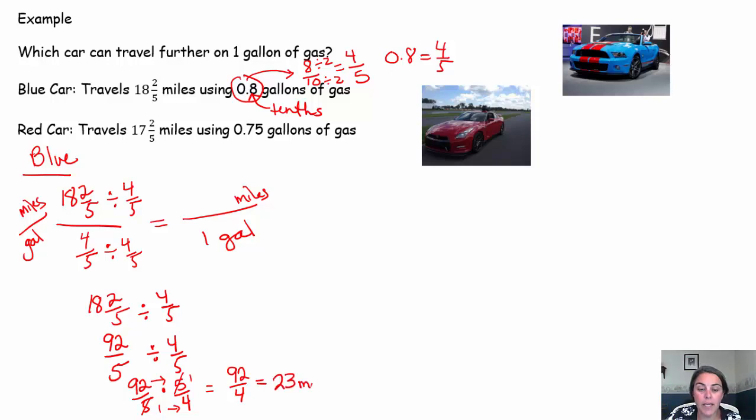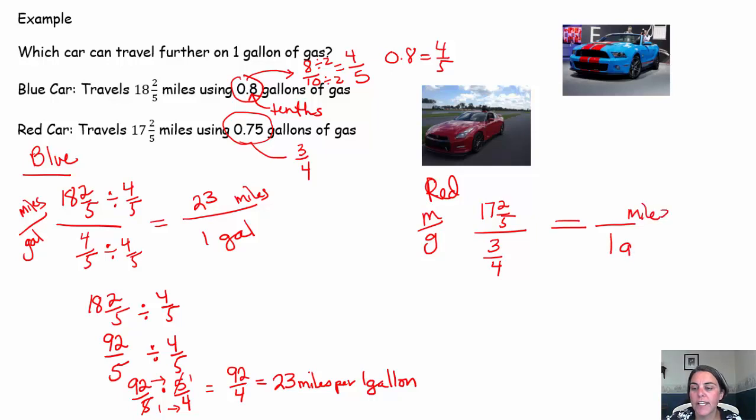So 23 miles per one gallon for that blue car. So that blue car can travel 23 miles in one gallon. Let's check for the red car. Again, we'll do miles per gallon. We know they can travel 17 and 2/5 miles on 0.75 of a gallon. I always think of 0.75 as 75 cents. 75 cents is three quarters. So that's just a quick way to convert 0.75 to a fraction. So they can go 17 and 2/5 miles on 3/4 of a gallon of gas.